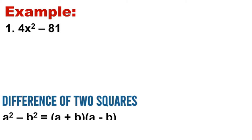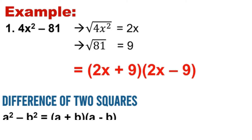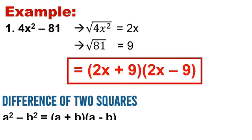Since this polynomial is really a difference of two squares, we may now apply the pattern. We have to get the square root of each term. The square root of 4x squared is 2x, and the square root of 81 is 9. So 2x will be the first term and 9 will be the second term, and we will be using plus and minus signs. So our answer is 2x plus 9 times 2x minus 9.